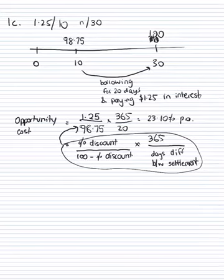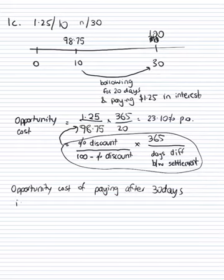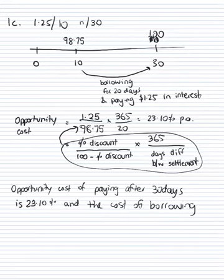Now what we need to do is decide whether or not we should take the discount or whether or not we should pay after 30 days. Now as the opportunity cost of paying after 30 days is what we calculated as 23.1 percent, and the cost of borrowing from a bank, for example...